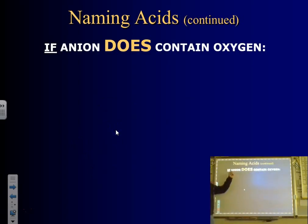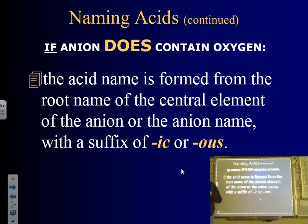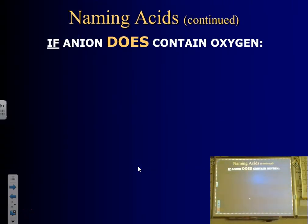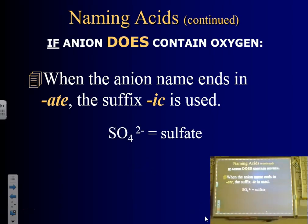If the anion does contain oxygen, we look at whether it ends in -ate or -ite. That determines whether the acid ends in -ic or -ous. Acids only end in -ic or -ous. If it ends in -ate, we drop the -ate and add -ic. For example, sulfate becomes sulfic — or more precisely, sulfuric.